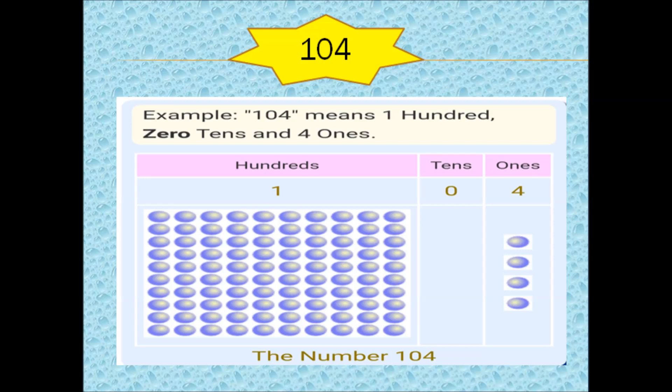And in the 100s column, we will write 1. So the number 104 means it has 1 hundred and 4 ones.